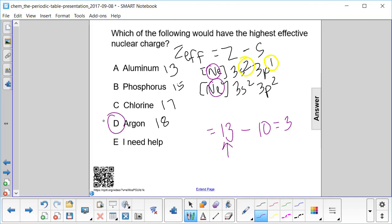Argon, because it has the largest number of protons. So 18 minus 10, the shielding constant, gives me an effective nuclear charge of 8 for argon. So the answer here we get is D.